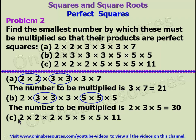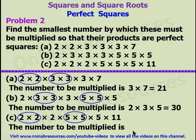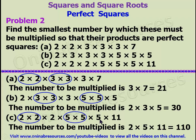For part c, in the same way we group the first two 2s together. The remaining 2 cannot be grouped. For the 5s, we group the two 5s together, and the rest cannot be grouped. So the number to be multiplied is 2 times 5 times 11. 2 times 5 is 10, times 11 gives 110. So 110 is the number to be multiplied by the given expression to make it a perfect square.